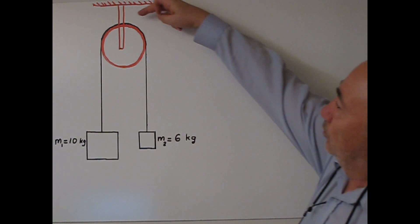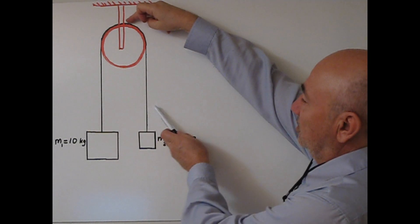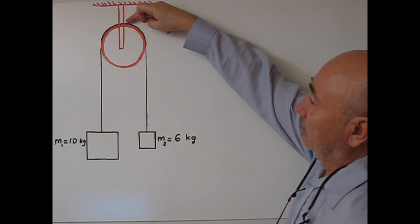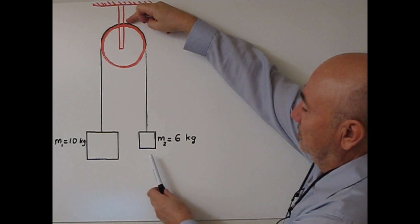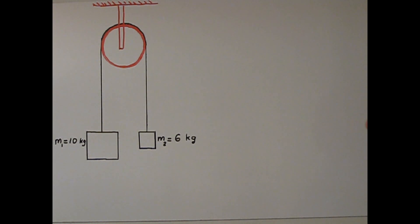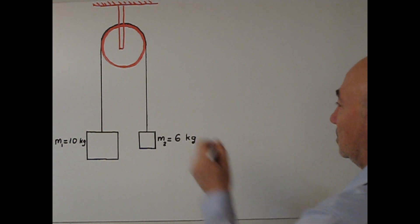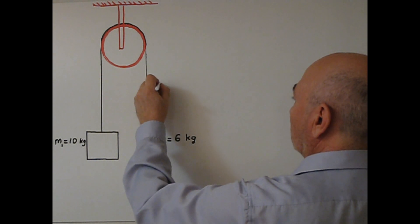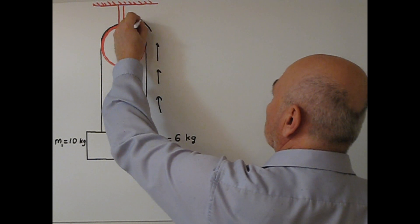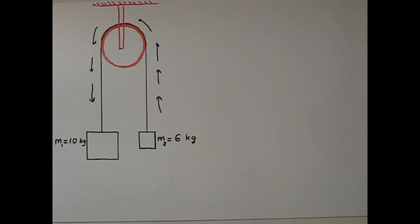If I press my finger here, the tension in this string and tension in this string are not the same because one mass is greater than the other. So when I release my finger, what happens? Because M1 is greater than M2, the system accelerates in the counterclockwise direction. So the question is: what is the acceleration of the system?